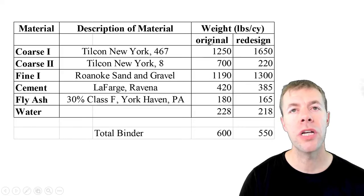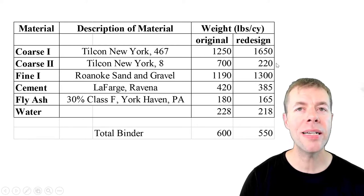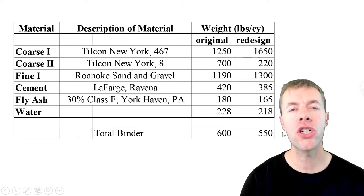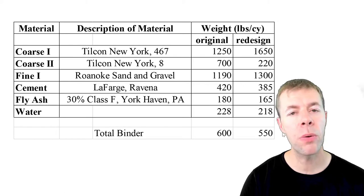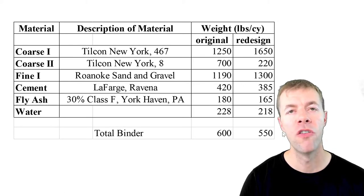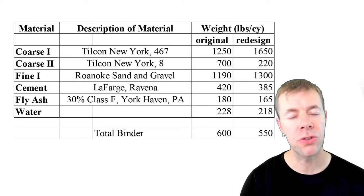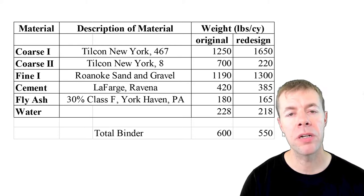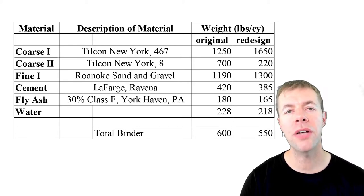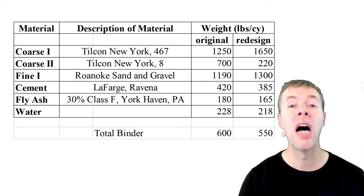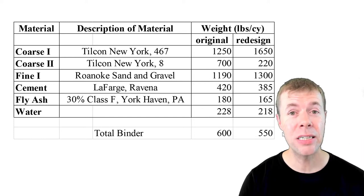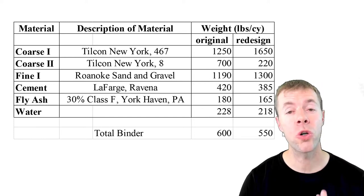Their mix is shown on the left; the mix that I redesigned is shown on the right. I used the same aggregates they were using: 467 stone, number 8, a natural sand, their cement, their class F fly ash. Everything was the same. I redesigned it with the tarantula curve spreadsheet.